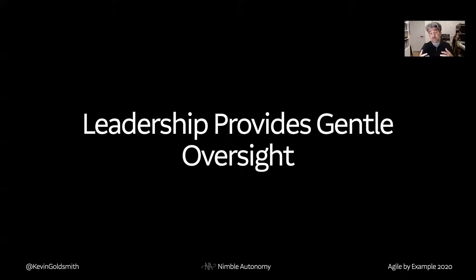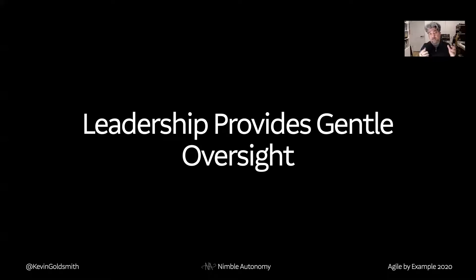But of course, that still requires that leadership of the organization provides what I call gentle oversight. What I mean by that isn't that every decision needs to be reviewed or approved. It means the team is making decisions, leadership is paying attention to how things are going, and if it's clear that things are going in a bad direction — which may not be obvious to the team but is obvious to leadership — they need to work with the team to get them back on track in a gentle way that preserves their autonomy as much as possible. A way I think about this is asking hard questions: Have you thought about this? What are you going to do about this? This seems like it could be a problem. Hopefully it should cause the team to question their decisions on their own and correct them.